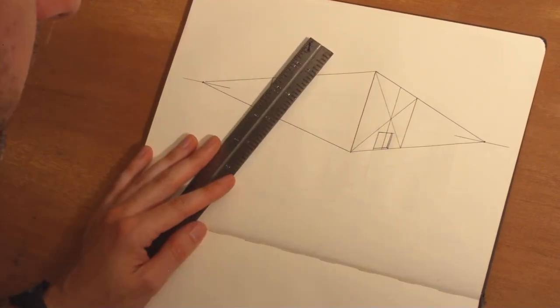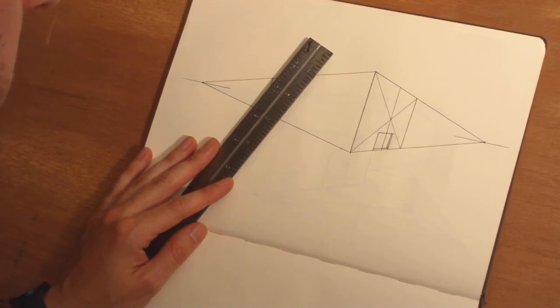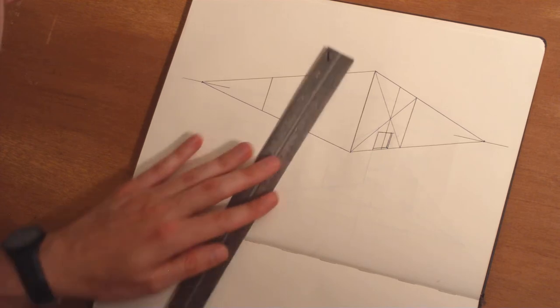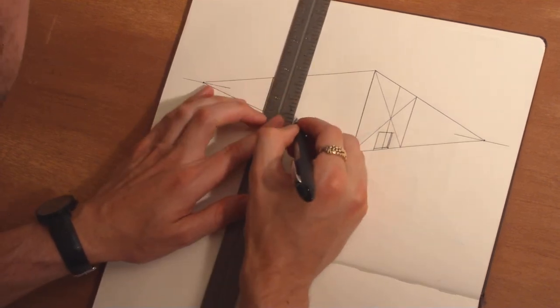So now we've kind of created a little doorway that sets back into this solid. And you can go to any level of detail. Just follow the rules that if you drop a vertical, if anything is going to recede into the building, it's going to go to that vanishing point.